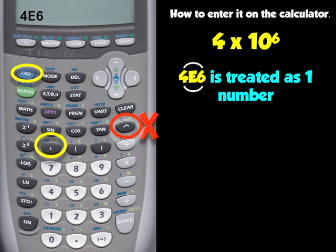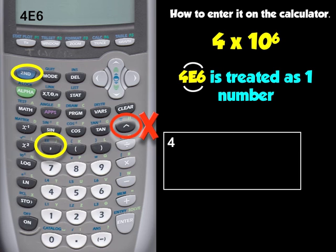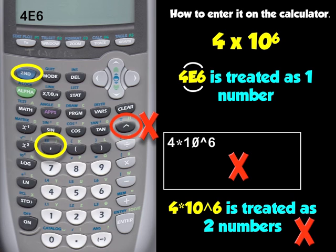If you use the caret symbol and type 4 times 10 caret 6, it is treated as two numbers, not one. So if you try squaring it, it'll square 10 to the 6 but not the 4. Or if you divide some number by it, it'll divide by the 4 and then multiply by 10 to the 6, which is not what you intend. Always use the 2nd EE key — do not use the caret symbol, because that treats everything as two numbers and you want it to be one number.